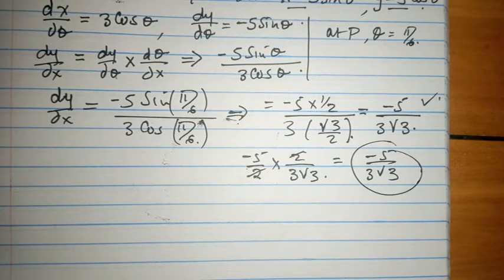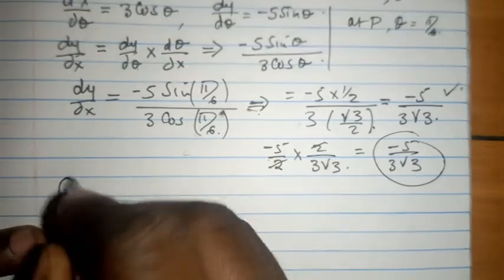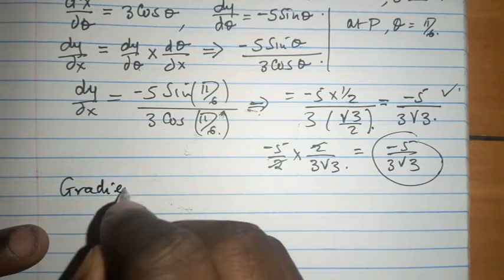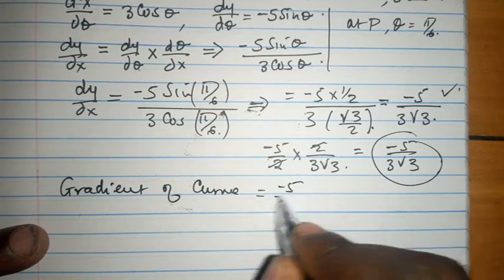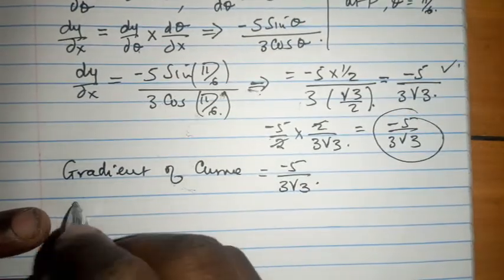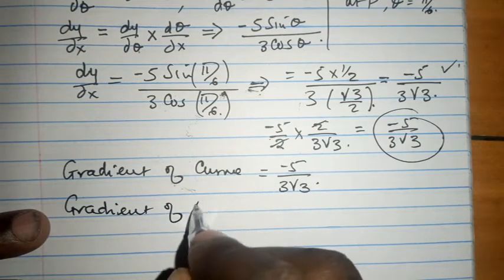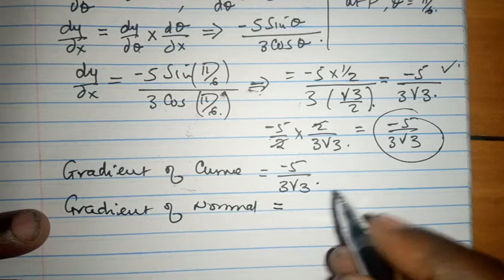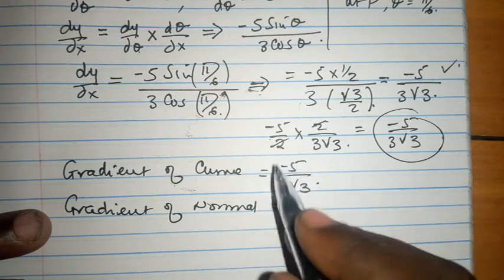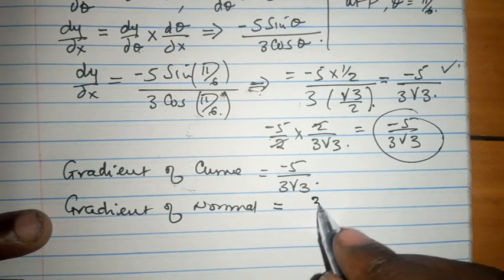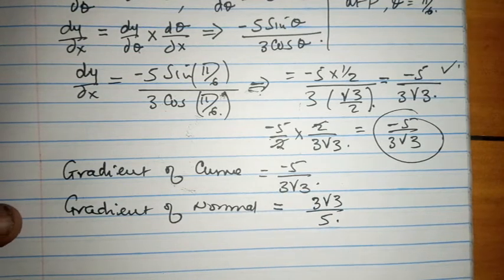The gradient of the normal is not the same as the gradient of the curve, which is minus 5 over 3 root 3. The gradient of the normal is going to be the reciprocal, free from the negative, which is 3 root 3 over 5, because the product of the two perpendicular gradients must equal negative 1.